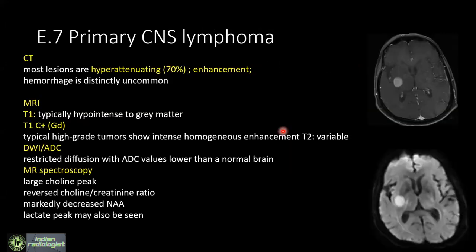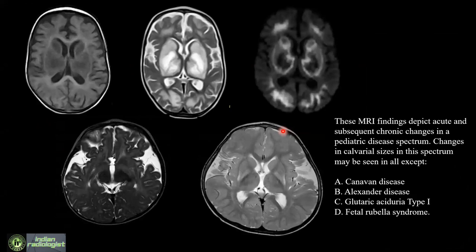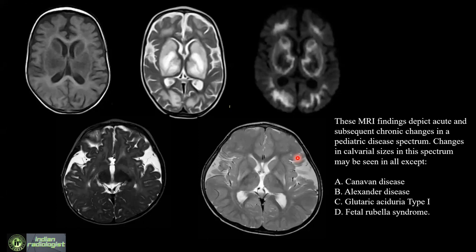MRI images depict acute and subsequent chronic changes in a pediatric disease spectrum. These are three images of the same disease in acute phase and two images in the chronic phase. In this particular disease the calvarial size changes. You have to choose the option where the size of the calvarium does not change, similar to what is seen in this disease — a tricky question.